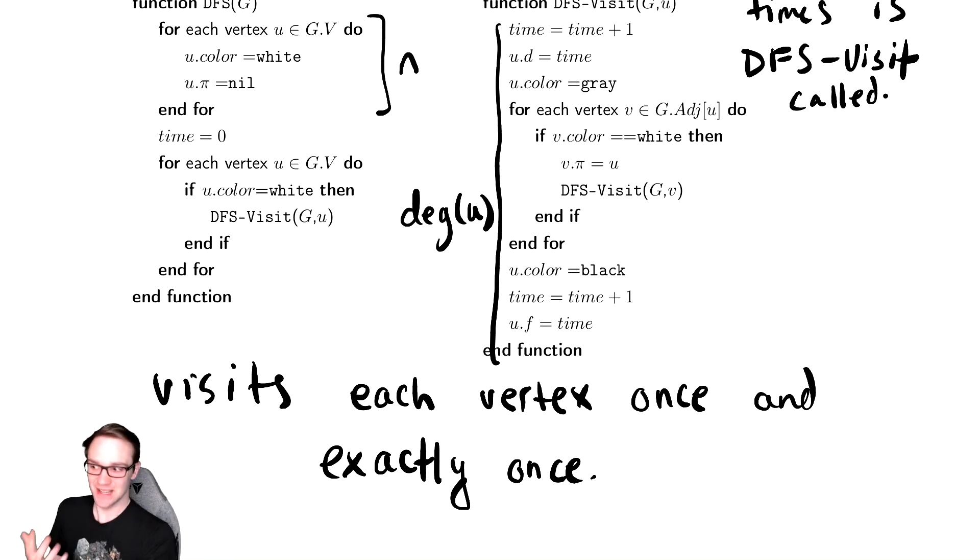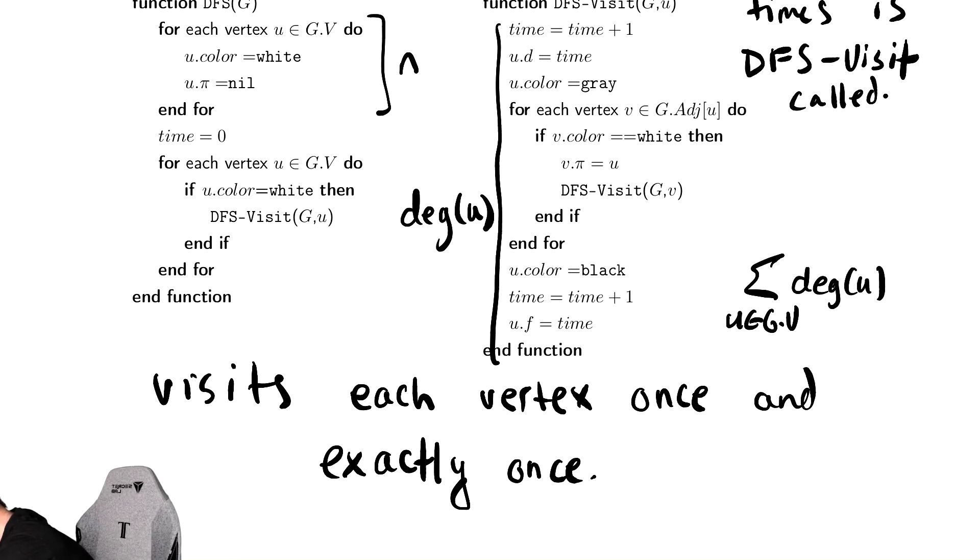So just like breadth-first search, it runs over every vertex in the vertices and it takes degree of u time. So that's 2m, just like we saw with breadth-first search.